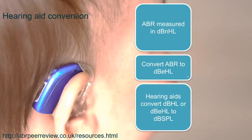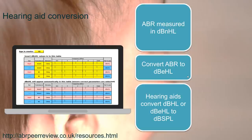In the past, converting to dB-EHL was a long-winded process requiring a stimulus correction and an age correction to be added together. Today, the conversion is much easier thanks to a dB-NHL to dB-EHL calculator in Excel developed by UK audiologist Adam Chowl, freely accessible online. All you need to do is download the calculator, input the values from your clear responses at threshold, and the dB-EHL values will be generated. This is a really nice tool and I really encourage you to download it, as it will make your lives much easier.